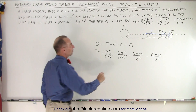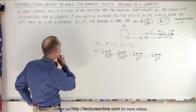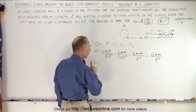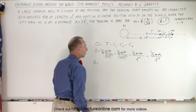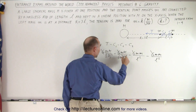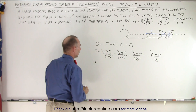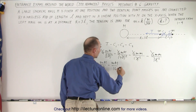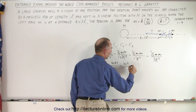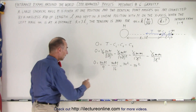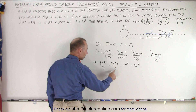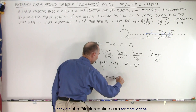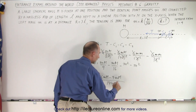That whole expression equals zero. We can cancel G from every term and L² from every term, leaving: 0 = mM/9 − mM/16 − m² − m². Combining the first two terms with common denominator 144 gives: 0 = (16mM − 9mM)/144 − 2m², which simplifies to 0 = 7mM/144 − 2m².